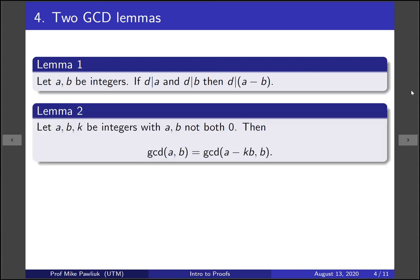The more interesting result is the following. If a, b, and k are integers, and a and b are not both 0, then the GCD of a and b is the same as the GCD of a minus kb times b. This is saying that you can subtract off multiples of b from a and still keep the same GCD.